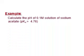Now we will have an example. Calculate the pH of a 0.1 molar solution of sodium acetate, given that the pKa value is equal to 4.76. Since we are given pKa and want pKb, we use the relation: pKb equals 14 minus pKa.